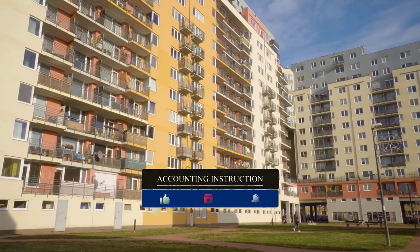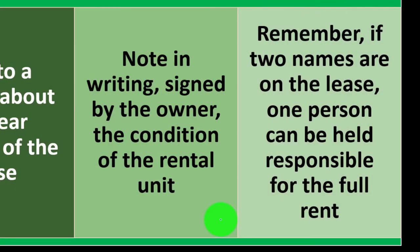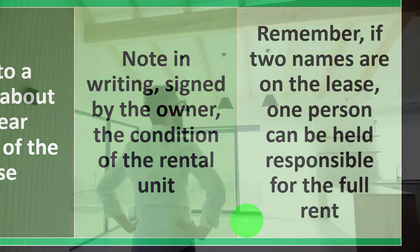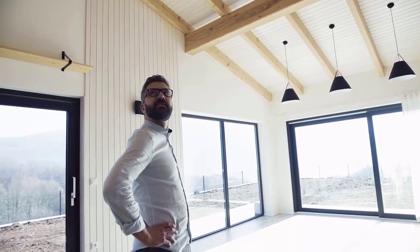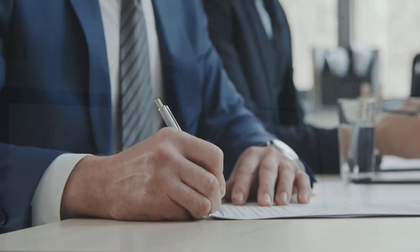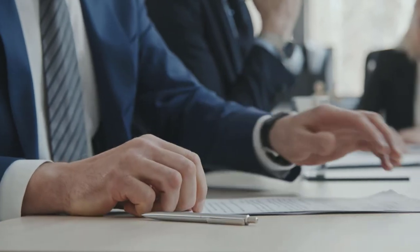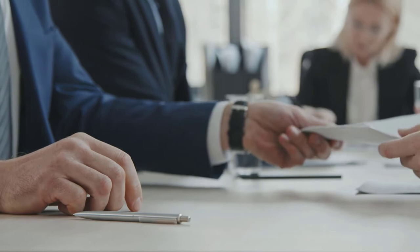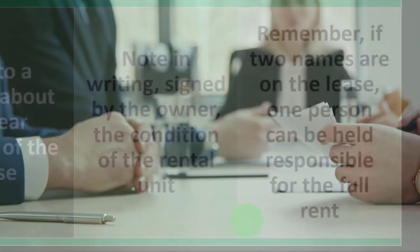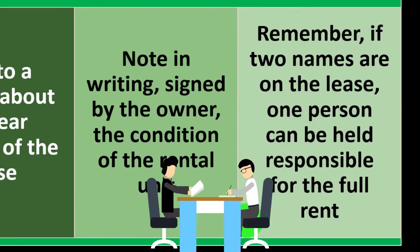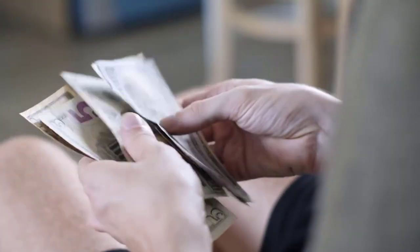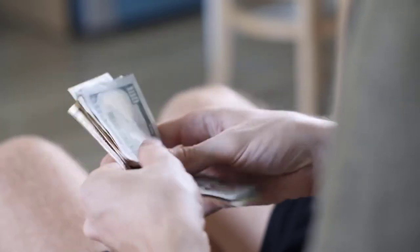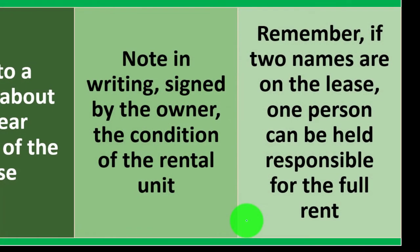Make sure any pre-existing damage is documented so you're not paying for it out of your security deposit. Remember: if two names are on the lease, one person can be held responsible for the full rent. When two people sign a lease it's similar to a partnership — both parties are liable. If one person doesn't pay their share, the other may still be legally required to cover the full rent.